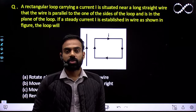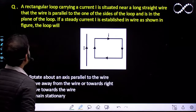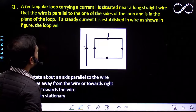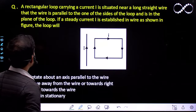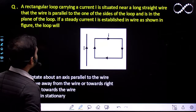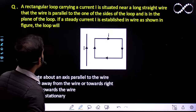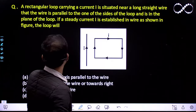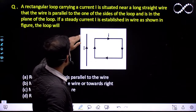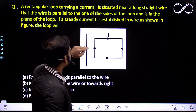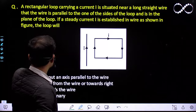Hello students, let us see this question here. A rectangular loop carrying a current I is situated near a long straight wire, where the wire is parallel to one of the sides of the loop and is in the plane of the loop. If a steady current I is established in the wire as shown in the figure, then the loop will — let us find what happens.